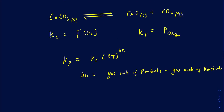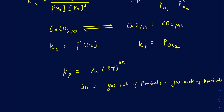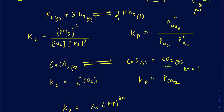You need to look for the delta N values. For the CaCO3 reaction, we don't have any gas in the reactants. We have one gas mole in the products, which is only the CO2. So it's one minus zero, which equals one. For the N2 + H2 reaction, the gas moles on the product side is two (for NH3), and on the reactant side we have one for N2 and three for H2. So it's two minus four, giving us delta N of negative two.